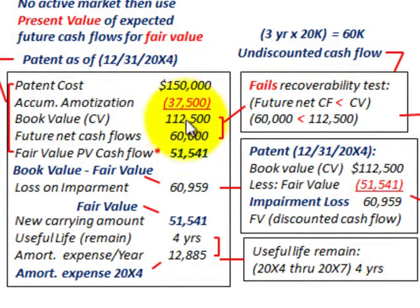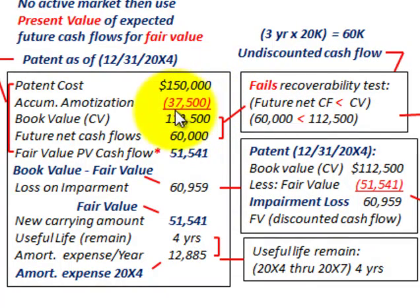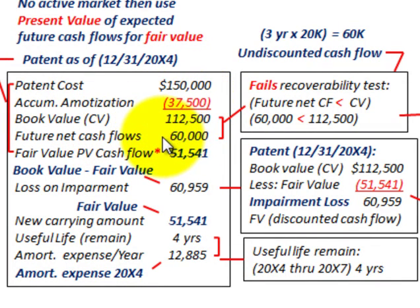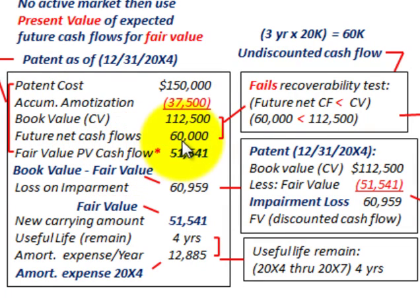Let's look at our calculations to determine any loss as of 12/31/20X4. Patent cost was $150,000. Accumulated amortization is $37,500, so the book value or carrying value is $112,500 — simply $150,000 less accumulated amortization. Our future net cash flows undiscounted are $60,000 ($20,000 per year for three years). The fair value — the present value of those future cash flows — we determined to be $51,541.